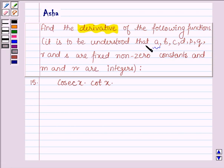It is to be understood that A, B, C, D, P, Q, R and S are fixed non-zero constants and M and N are integers.